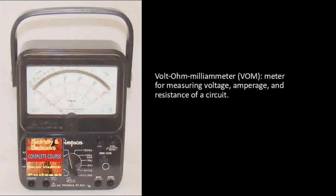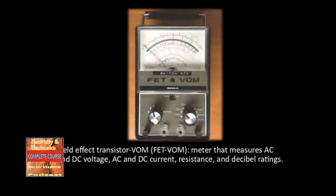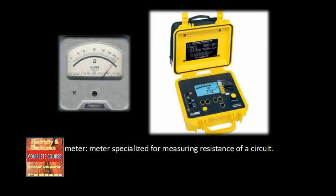Section 2.5: The volt-ohm-milliammeter, or VOM, is a common multimeter that combines a voltmeter, ammeter, and ohmmeter in one instrument. The VOM is inexpensive and portable, but may have low input resistance in ohms per volt on the lowest voltage range, causing accuracy problems. When the field effect transistor was developed, the FETVOM was designed to overcome the low input impedance problem, measuring AC and DC voltages, AC and DC current, resistance, and decibel ratings. Some multimeters are also equipped with accessories such as temperature probes.